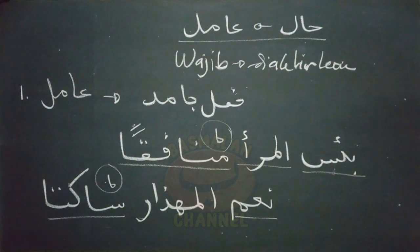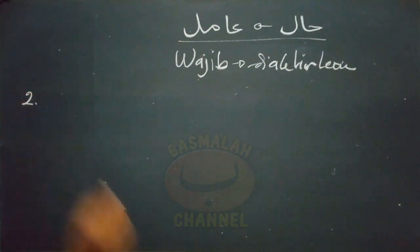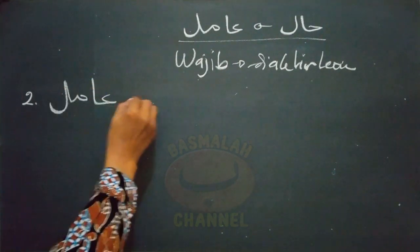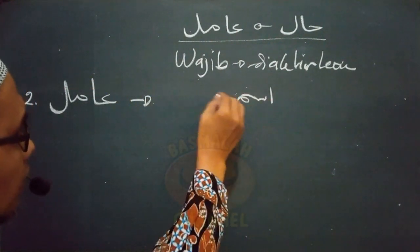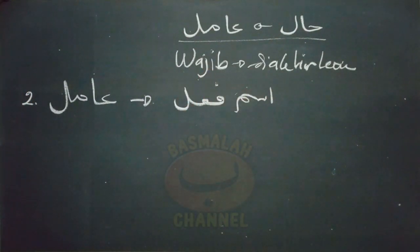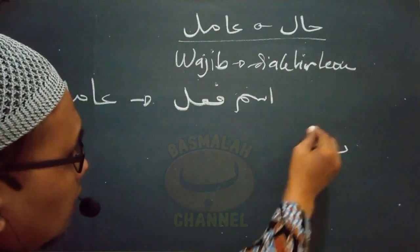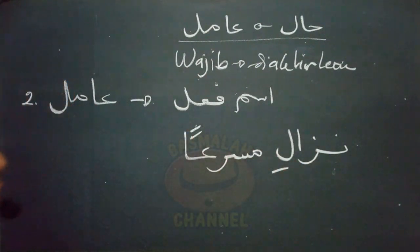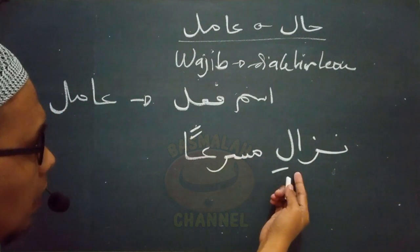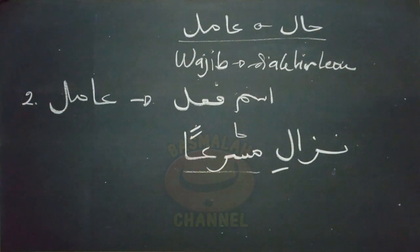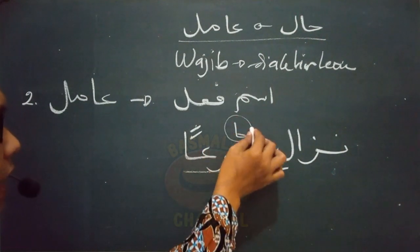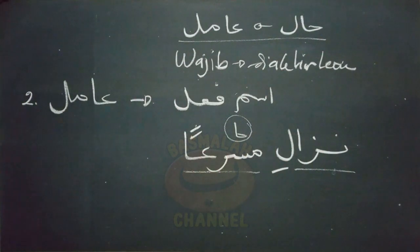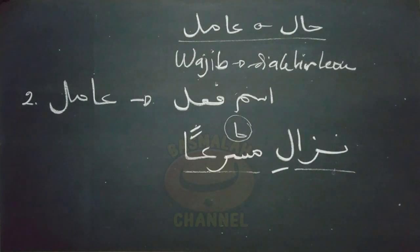Ini adalah kondisi pertama di mana hal tidak boleh didahulukan dari amilnya. Kondisi yang kedua adalah manakala amil dari hal berupa isim fi'il — kalimat isim yang mengandung makna fi'il. Contohnya seperti lafad 'naza li musri'an': hendaklah turun kamu, padahal dalam keadaan cepat. Lafad 'musri'an' merupakan hal, sementara amilnya adalah lafad 'naza li' yang berupa isim fi'il. Dalam kondisi ini hal tidak boleh didahulukan dari amilnya. Tidak boleh kita mengatakan 'musri'an naza li'.